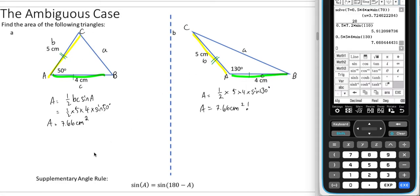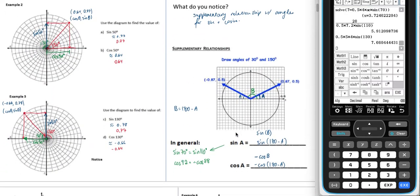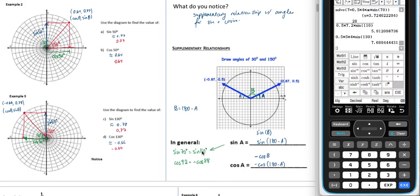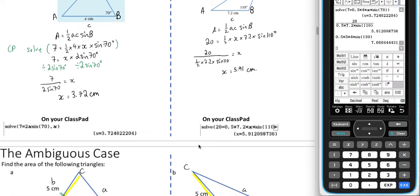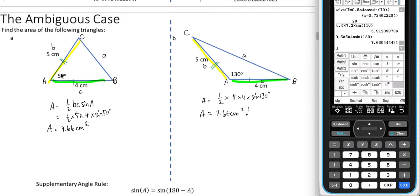Now, I'm not sure if you remember the supplementary angle rule from, you know, way up here. Let's scroll up, and do you remember looking at the supplementary rule? Sine A is equal to sine 180 minus A, so we know if we've got, you know, sine 70 degrees is the same as sine 110. If we look at this case over here, we can see that sine 50 degrees is equal to sine 130.